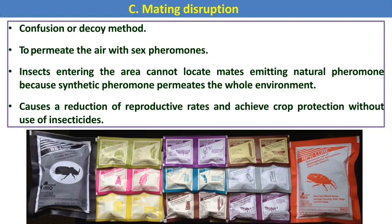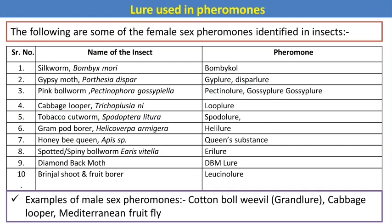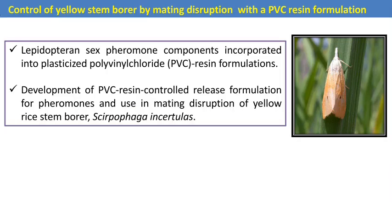Mating disruption is a confuse or decoy method of pest management. The air is permeated with sex pheromones so that insects entering the area cannot locate mates emitting natural pheromones because synthetic pheromones permeate the whole environment. This causes a reduction of reproductive rates and actual crop protection without the use of insecticides. Different lures can be used to attract different male moths in the agroecosystem.